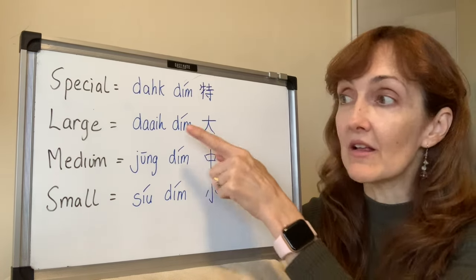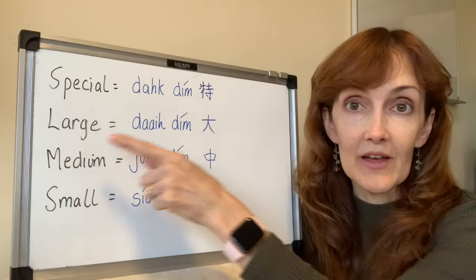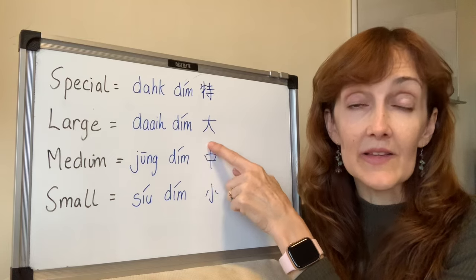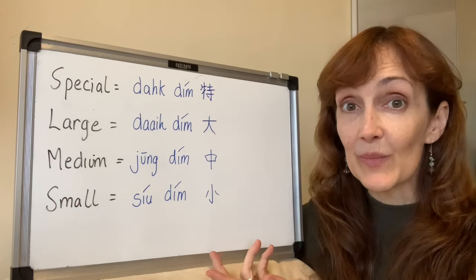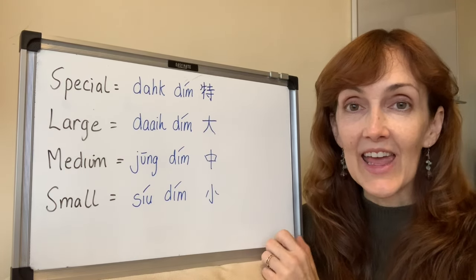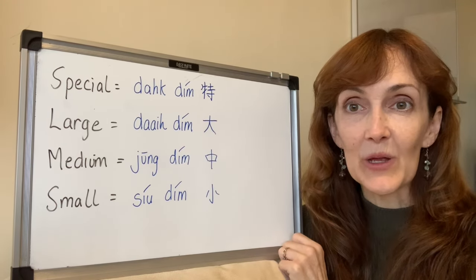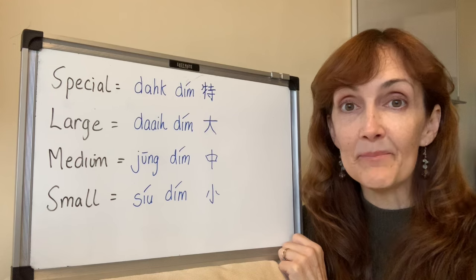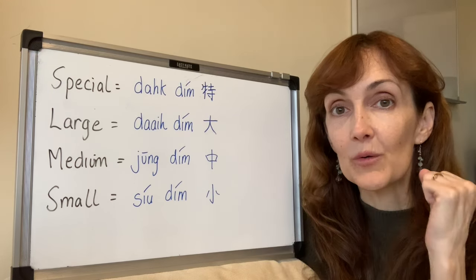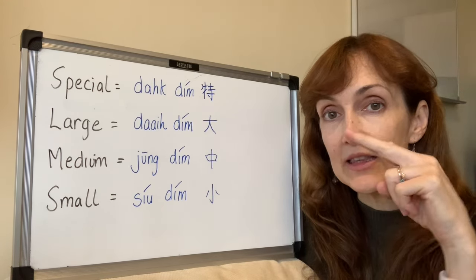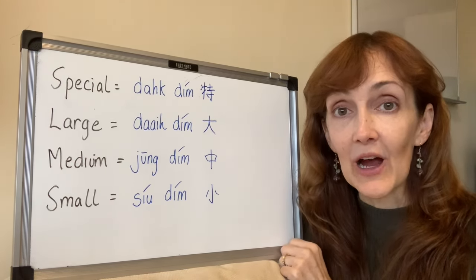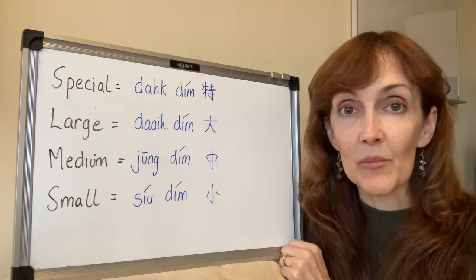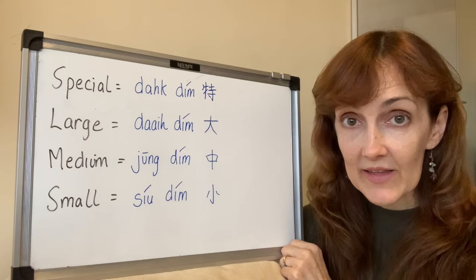Next come the large. This literally means large, but it is the next most expensive tier. That's going to be your 大點 (dai dim) — just the low tone dai. Dai dim are your next most expensive ones.